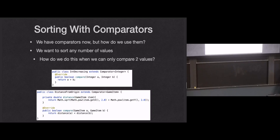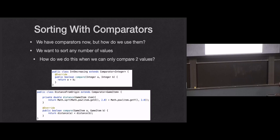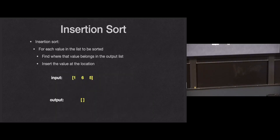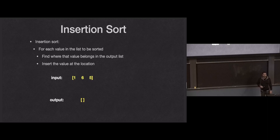Now we want to compare any number of values. If I have an ArrayList of a billion integers, all I have is the power to compare two at a time. Let's run insertion sort — you may have seen insertion sort, selection sort, and merge sort in 115. That's the sorting algorithm we're going to look at today.